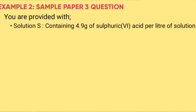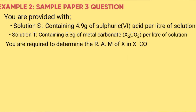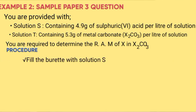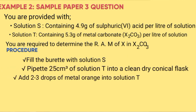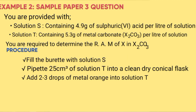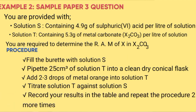This is a Paper 3 question. You are provided with solution S containing 4.9 grams of sulfuric acid per liter, and solution T containing 5.3 grams of metal carbonate X₂CO₃ per liter. You are required to find the RAM of X. Procedure: fill the burette with solution S, pipette 25 cm³ of solution T into a conical flask, add 2–3 drops of methyl orange indicator, titrate solution T against solution S, and record results in the table. Repeat two or more times.